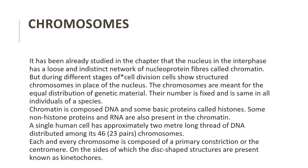Cell division is of two types: mitosis and meiosis. In mitosis, the number of chromosomes remains the same in the daughter cells. Taking the example of human beings, humans have 23 pairs of chromosomes in each cell, meaning 46 chromosomes in total in a single human cell.